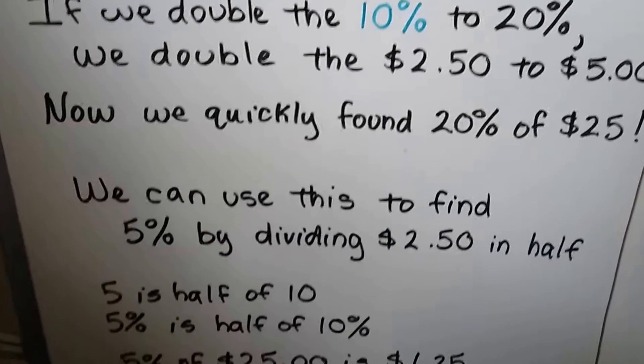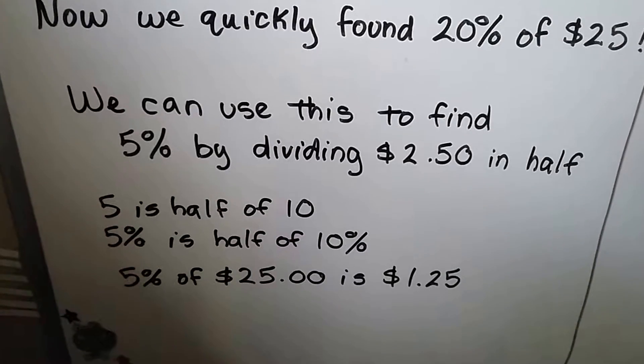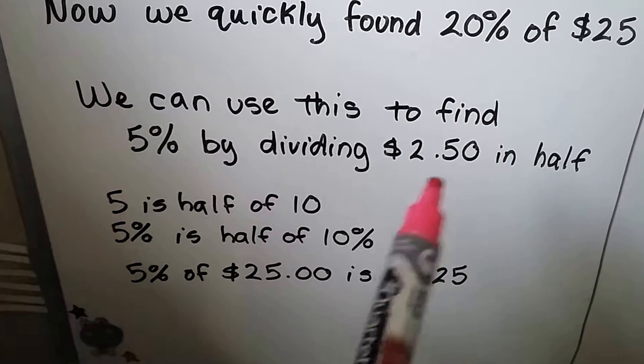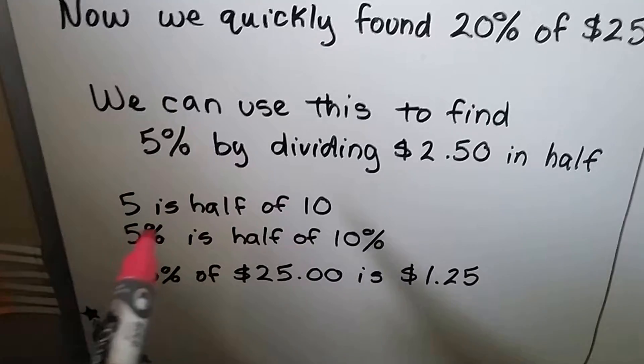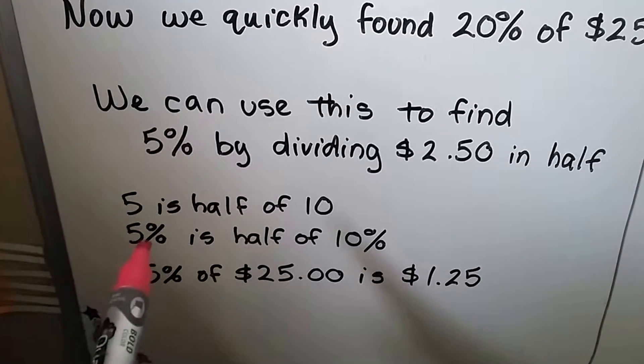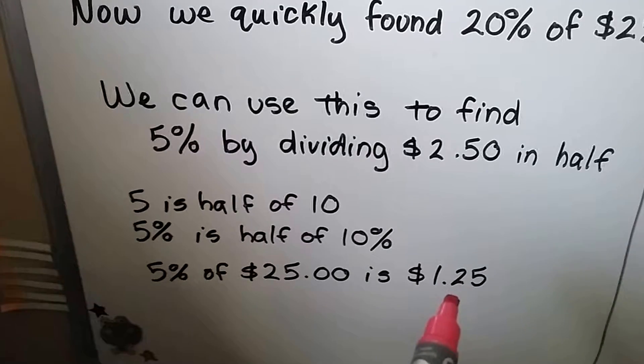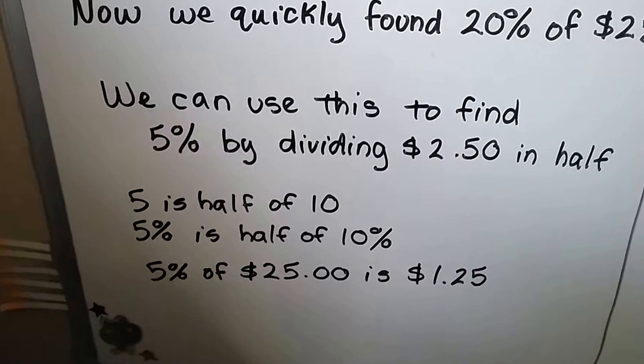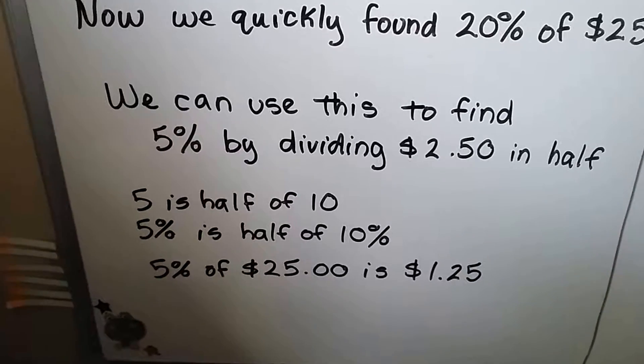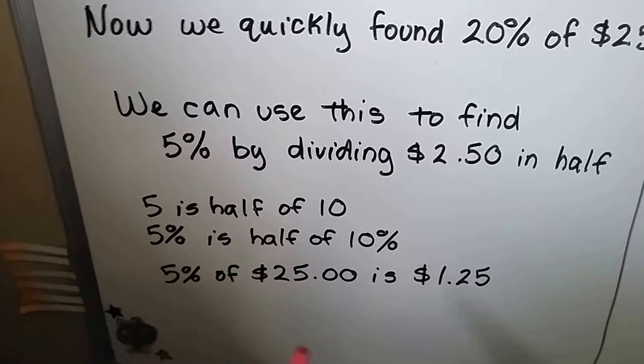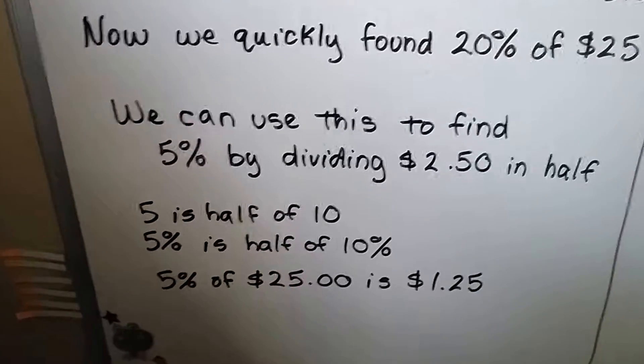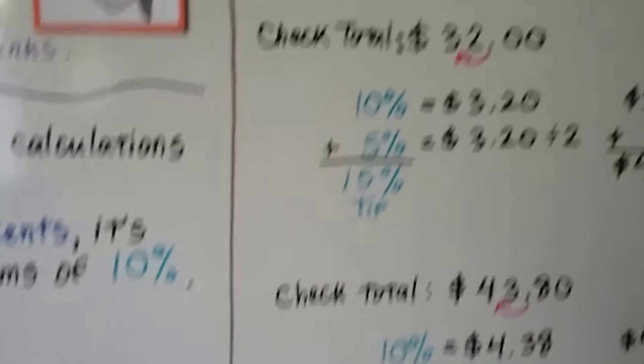We can use this to find five percent by dividing the two dollars and fifty cents in half. If that's ten percent, well five is half of ten, so five percent is half of ten percent. Five percent of twenty-five dollars is a dollar twenty-five. We just cut that in half. We can double it to find twenty percent or cut the ten percent in half to find five percent.